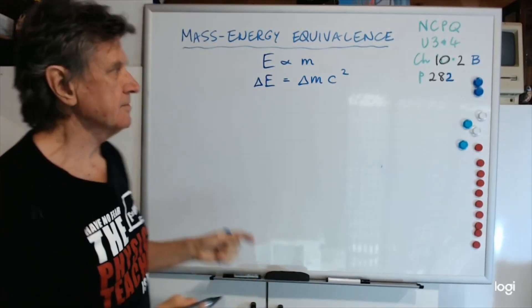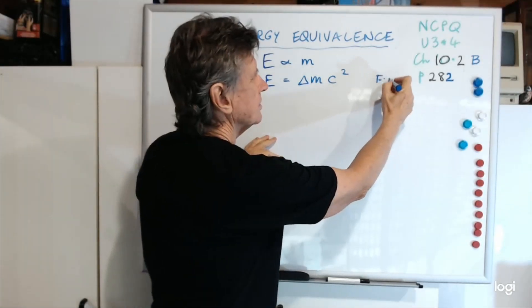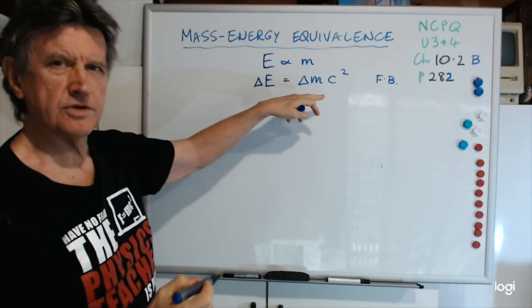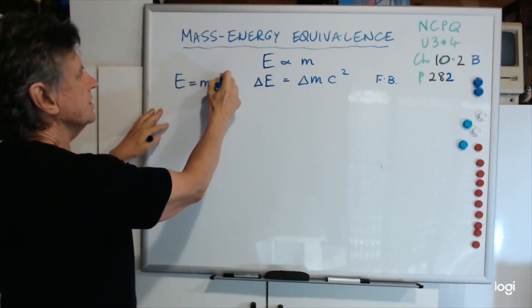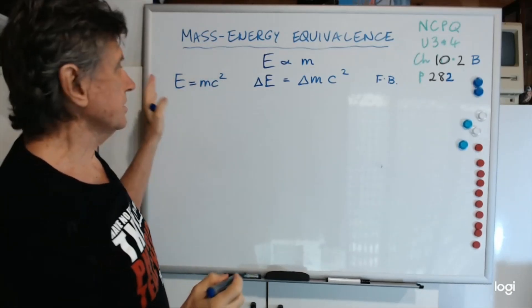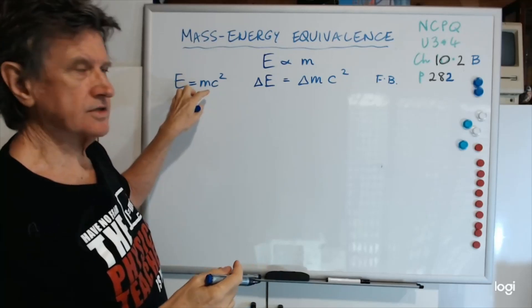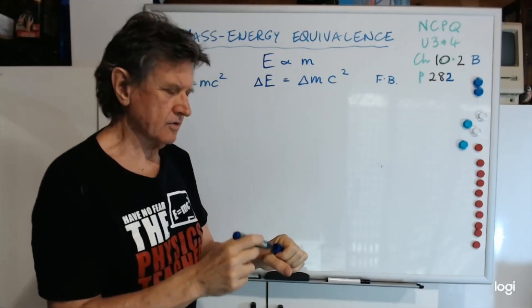Now that's Einstein's famous equation. That's how it will appear in the formula book, so you don't have to learn it. You have to understand what the terms are of course. It's normally written as E equals m c squared, and most people would recognize that as Einstein's equation. The proper way to write it, or the better way to write it, is like this.